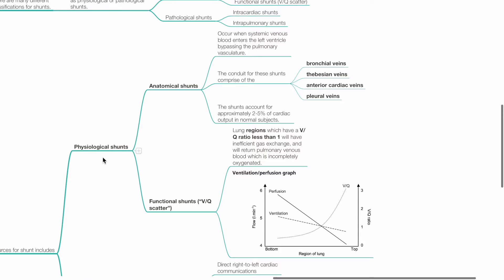Another type of physiological shunt is functional shunts, or V/Q scatter, which refers to lung regions which have a V/Q ratio of less than 1. This will have less efficient gas exchange and will return pulmonary venous blood which is incompletely oxygenated.